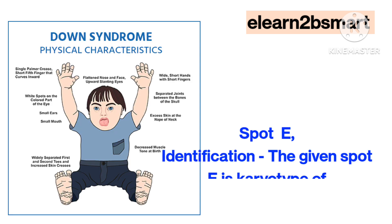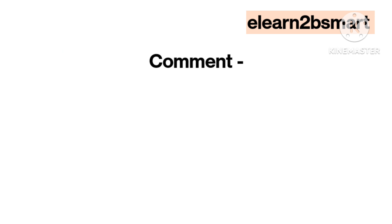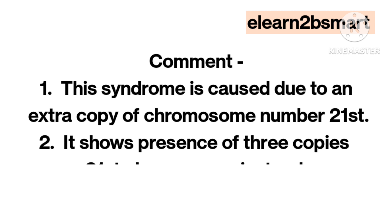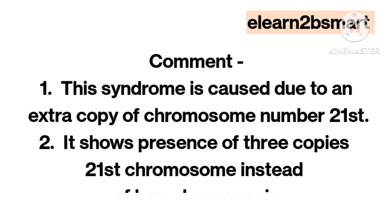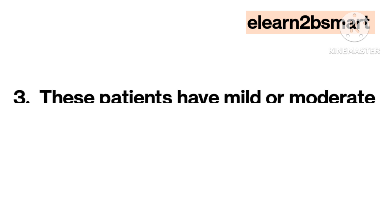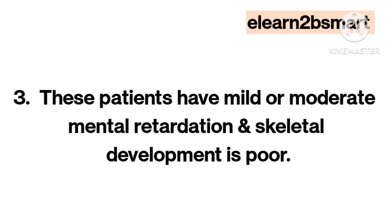Spot E. Identification: The given spot E is a karyotype of Down's syndrome. Comment 1: This syndrome is caused due to an extra copy of chromosome number 21. It shows the presence of 3 copies of the 21st chromosome instead of a homologous pair. These patients have mild or moderate mental retardation and skeletal development is slow.